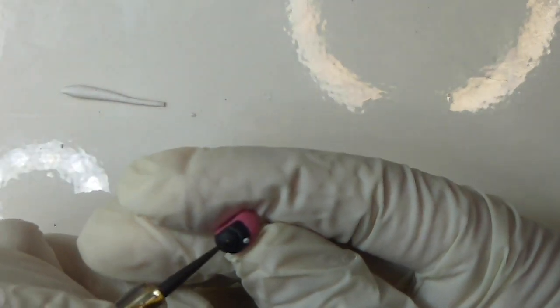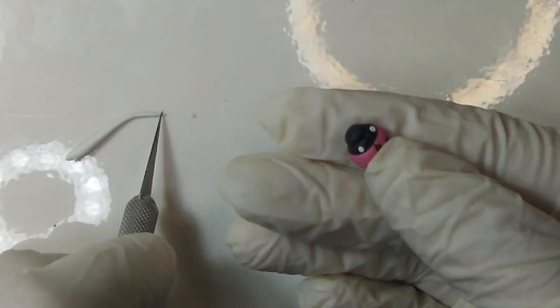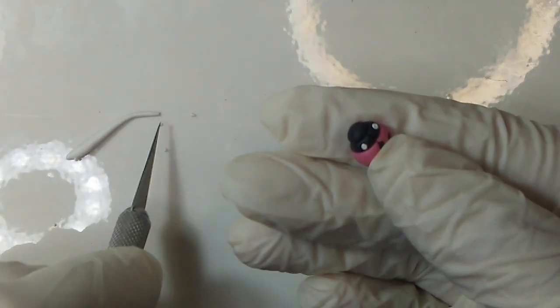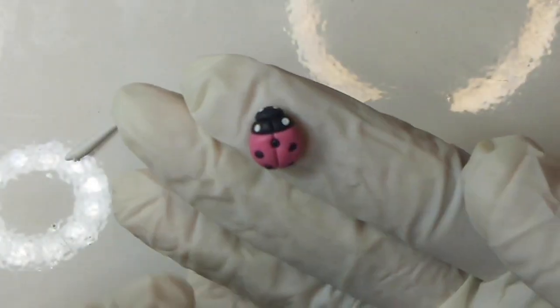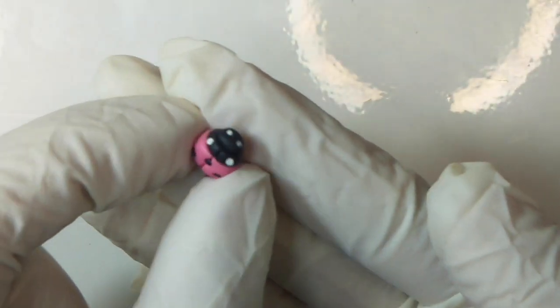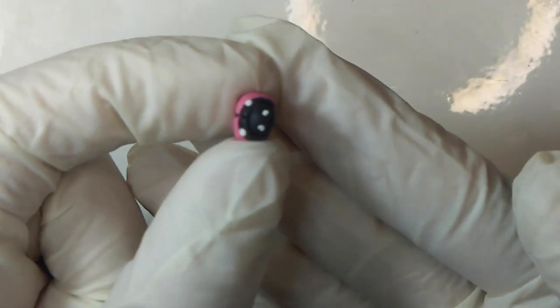Use your smallest dotting tool to create the indents on the head. You only need a very tiny bit of white clay for the head. This ladybug's looking super cute so far and you can totally skip this next step if you want, or you can add some more detail by adding legs.